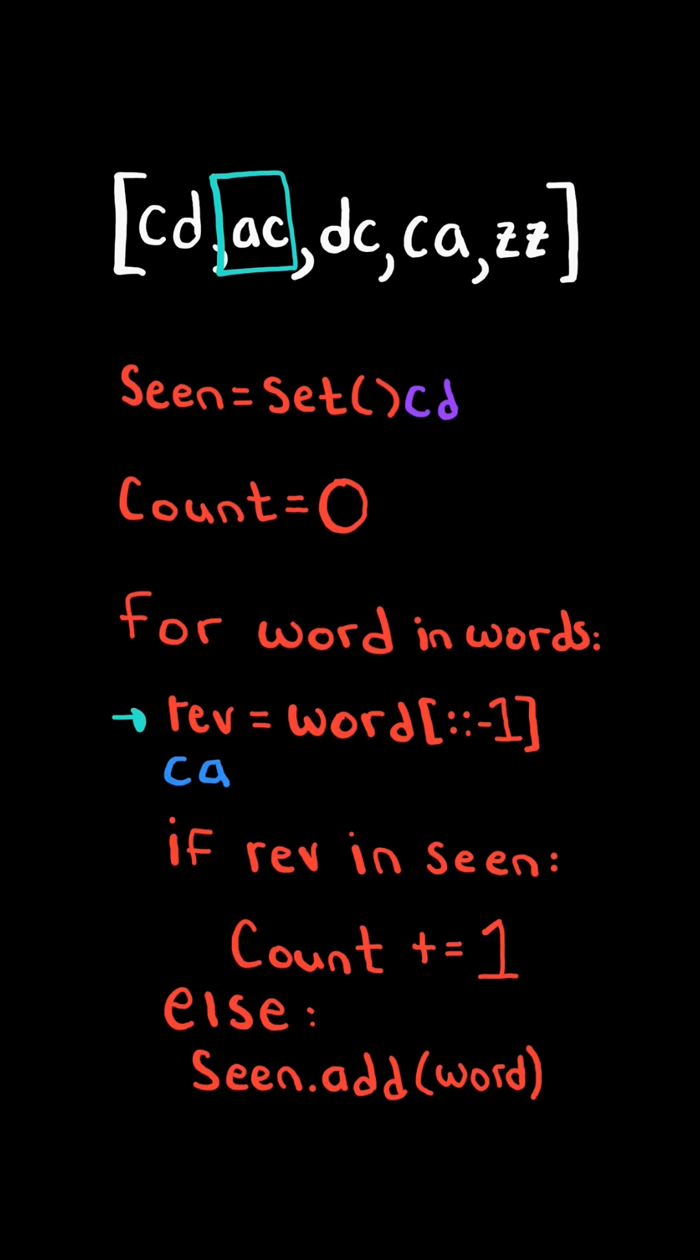The reversed word is CA and it does not exist in our set, so we add the word to our set and we continue. The reversed word is CD and it does exist in the set, so we found a pair and we increment count.